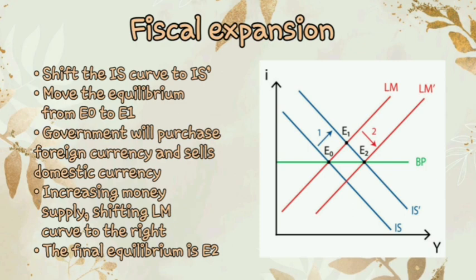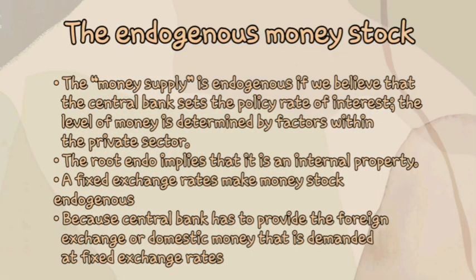An expansionary fiscal policy shifts the IS curve to IS prime, moving equilibrium from E0 to E1. Since the economy now has a balance of payments surplus and the exchange rate is fixed, government intervenes in the opposite way — purchasing foreign currency and selling domestic currency. This increases the money supply, shifting the LM curve to the right, and the final equilibrium is reached at E2, where at the same interest rate, production has increased greatly. The money supply is endogenous; the level of money is determined by factors within the private sector.